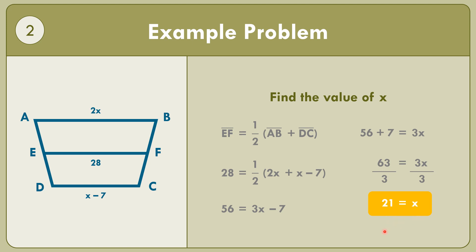So x equals 21. If we check: segment AB equals 2 times 21, which equals 42. We have 42, 28, and 14. Segment DC: 21 minus 7 equals 14. So the values are 14, 28, and 42, which confirms the pattern.